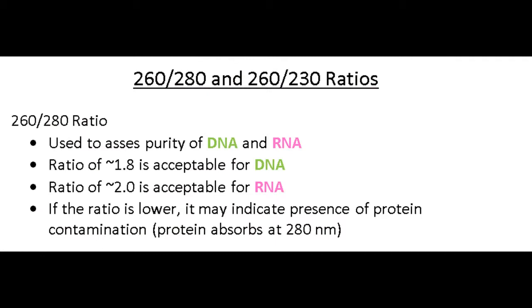When analyzing the purity of your sample, you want to look at two different values. The first one is the 260 to 280 ratio. This will determine if you have any protein contamination in your samples, as protein absorbs at 280 nanometers.